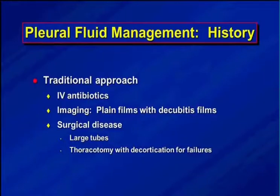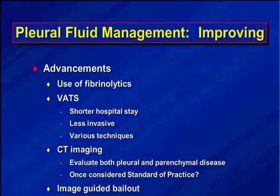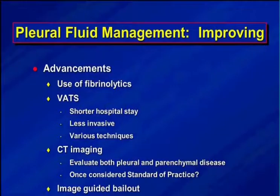The traditional approach was IV antibiotics, decubitus films — which are pretty worthless — and it was considered a surgical disease. They put huge tubes in, and when those failed, did a thoracotomy and decortication. Some improvement came with fibrinolytics, then VATS — video-assisted thoracoscopic surgery — which gives a shorter hospital stay and is less invasive. But not all VATS are the same; some use a small scope, others make an incision and do a minor decortication. CT imaging was also used to show both pleural and parenchymal disease, though I don't think routine CT should be done anymore.